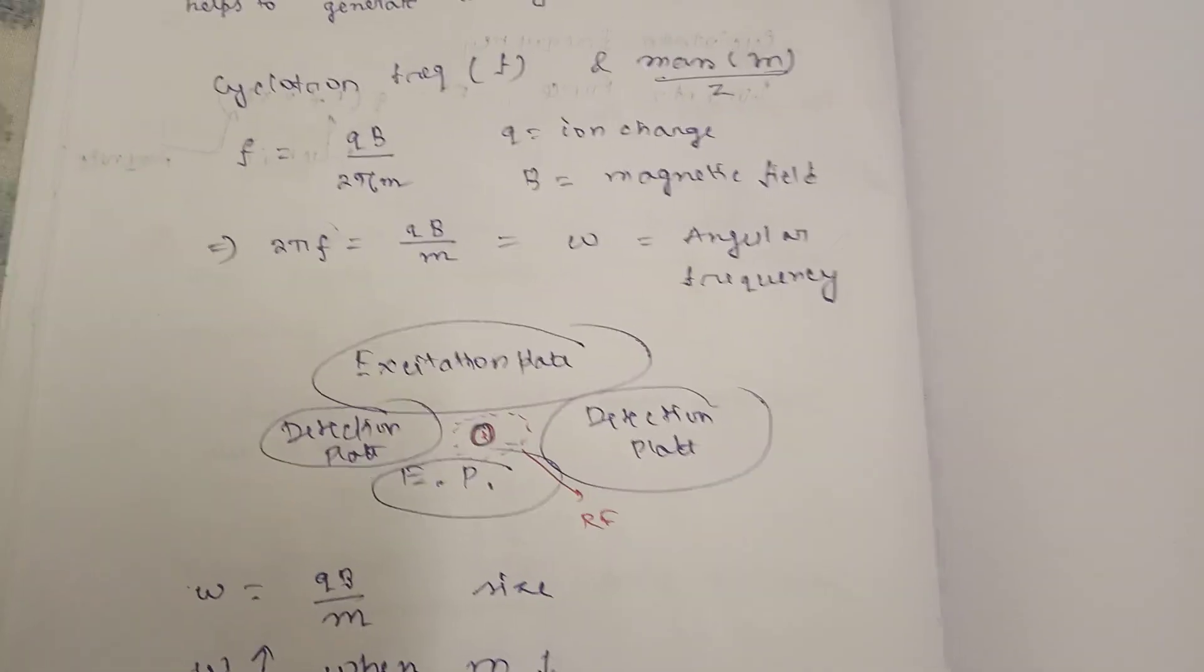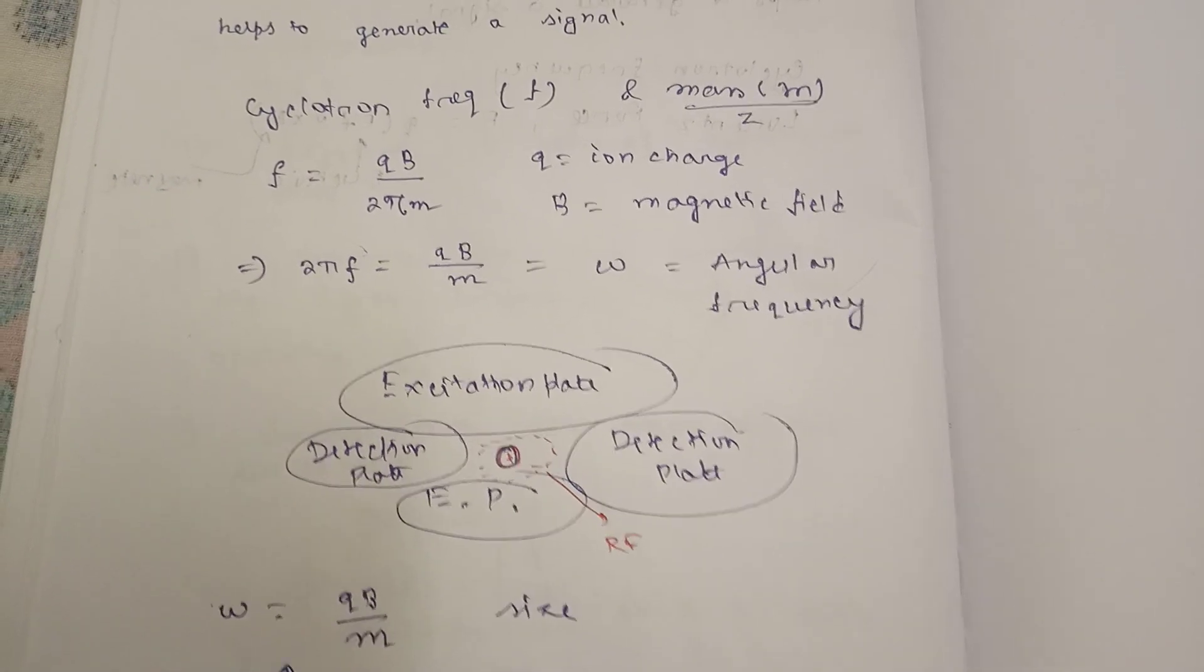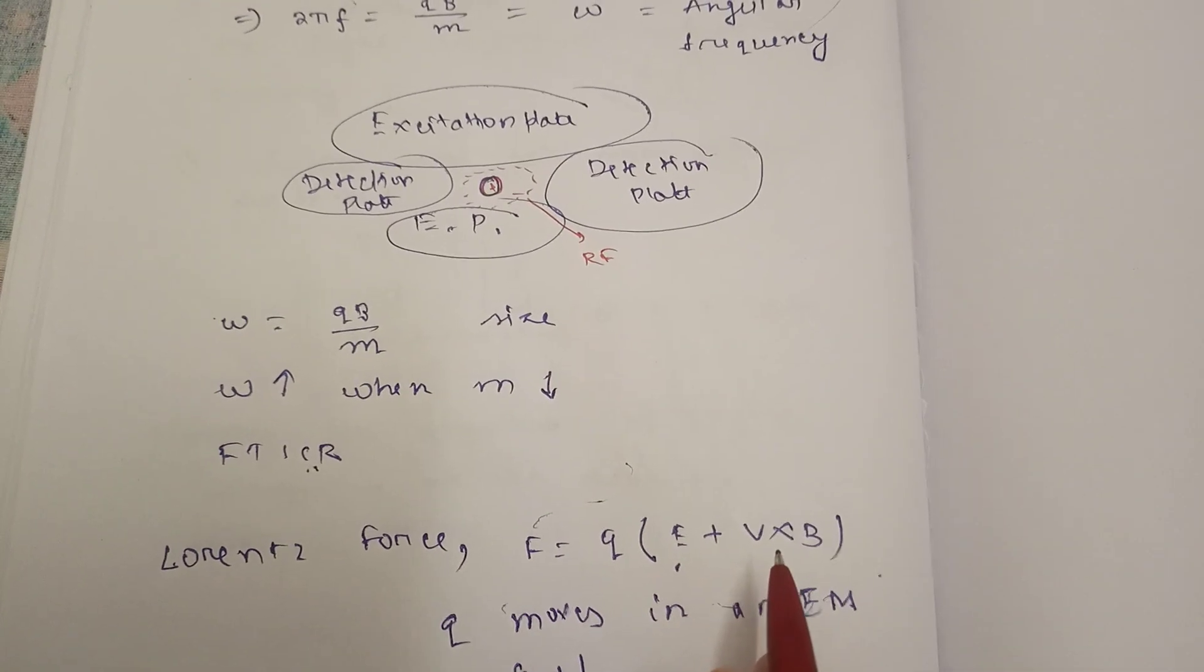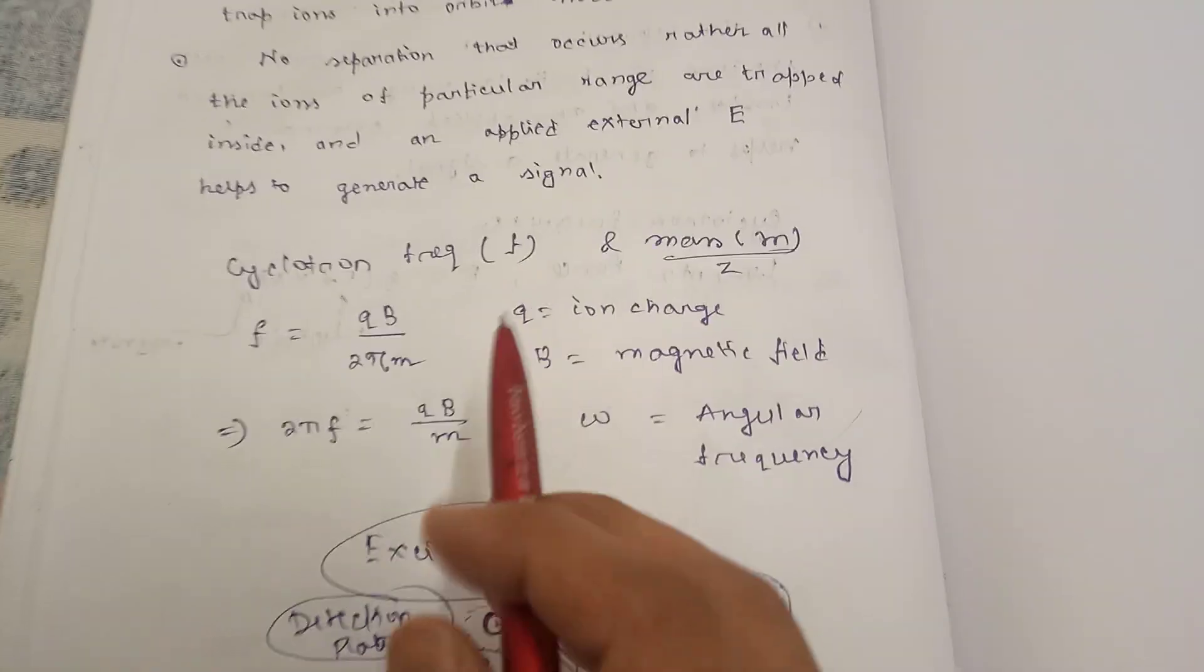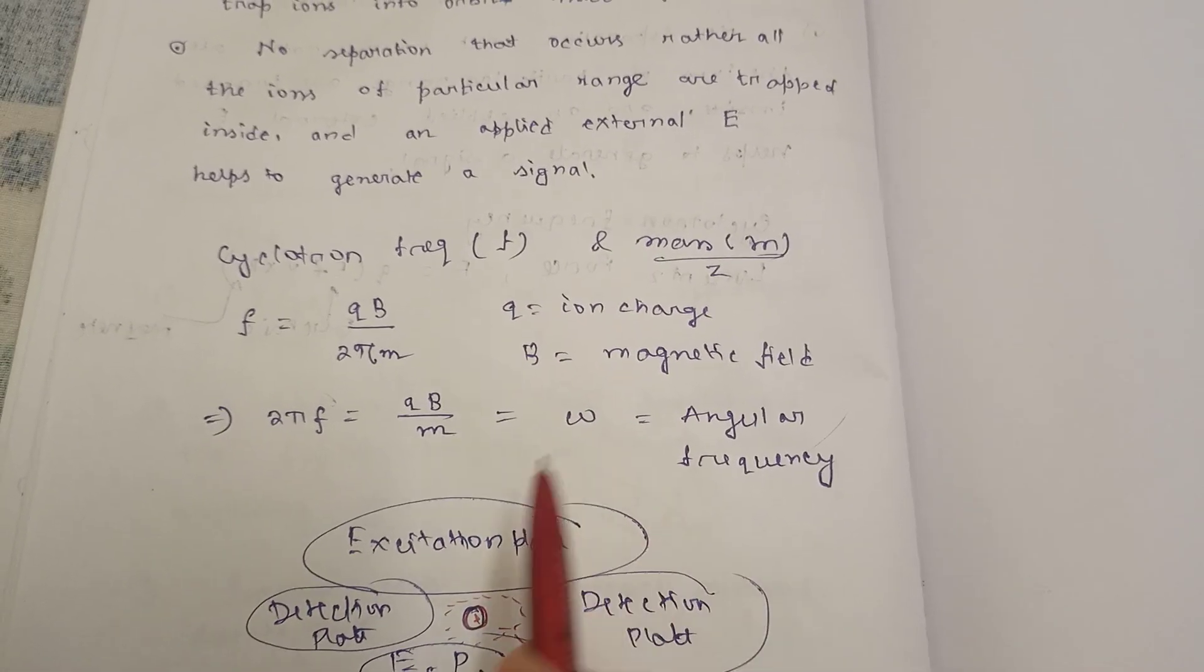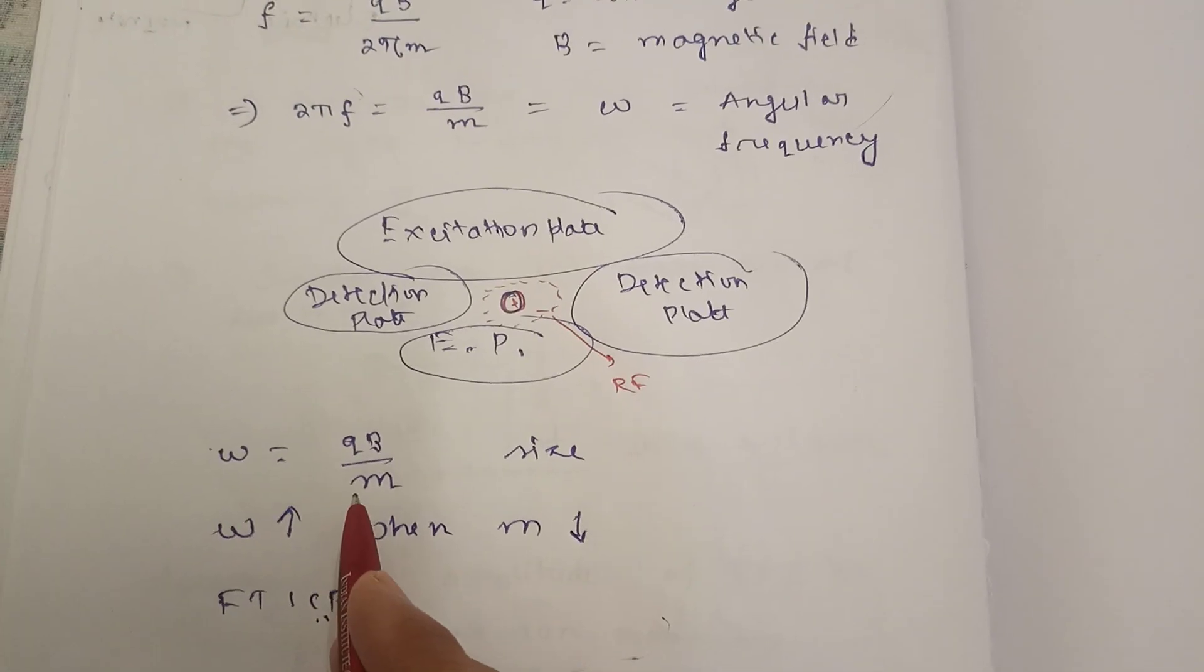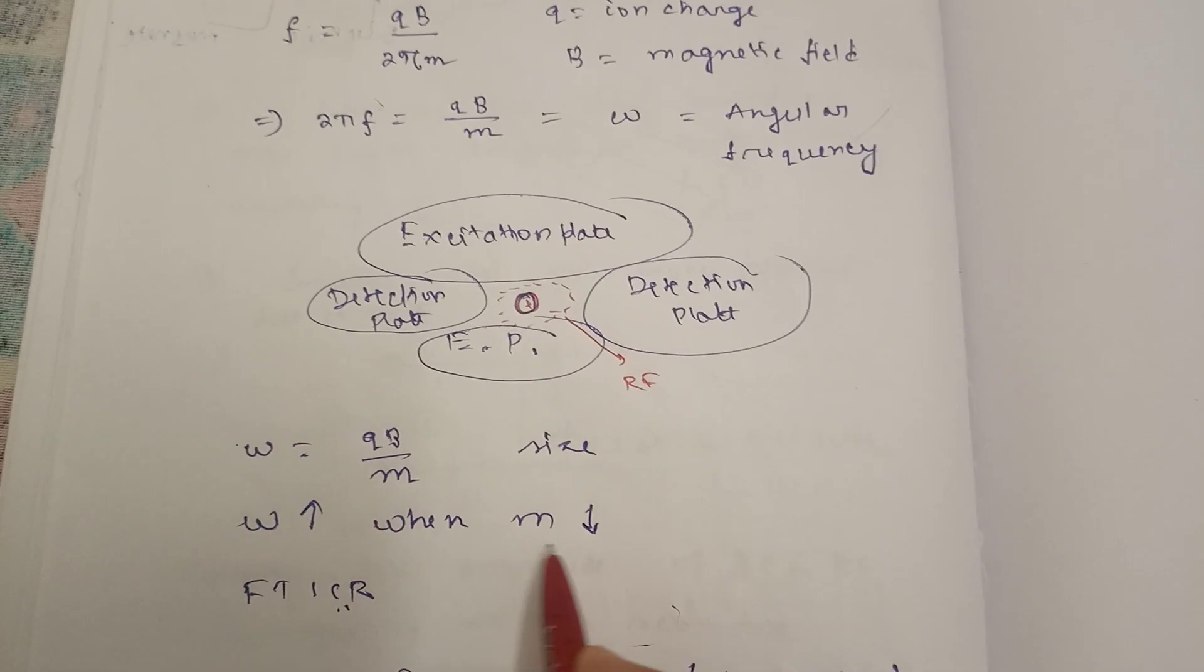With the Lorentz force equation F = q(E + v × B), we can derive these equations. From the angular frequency ω = qB/m, we can see that angular frequency will be more when the mass will be less.